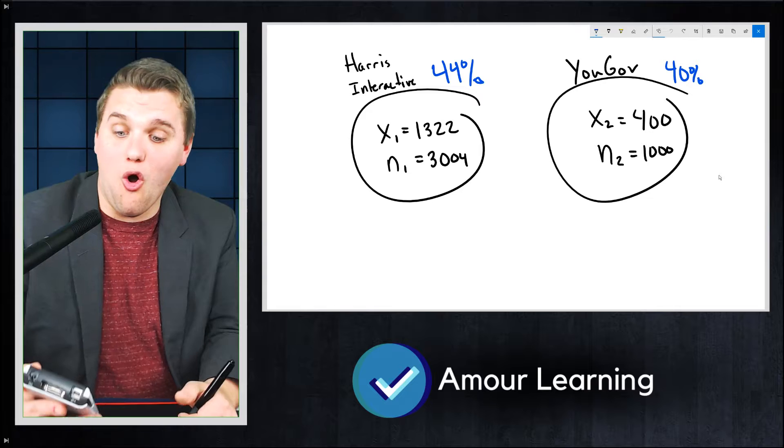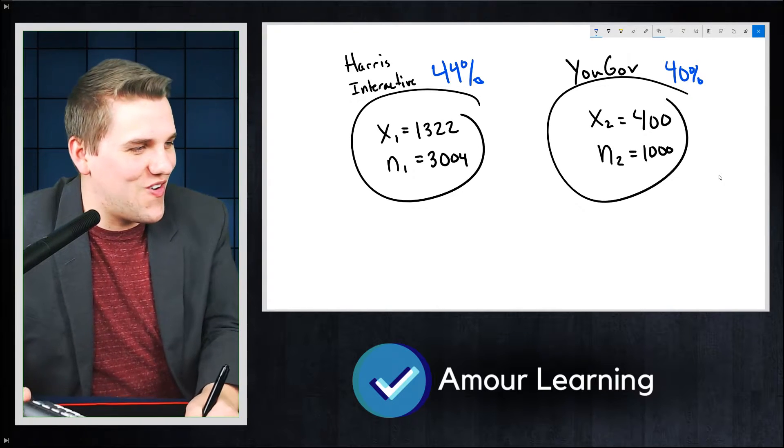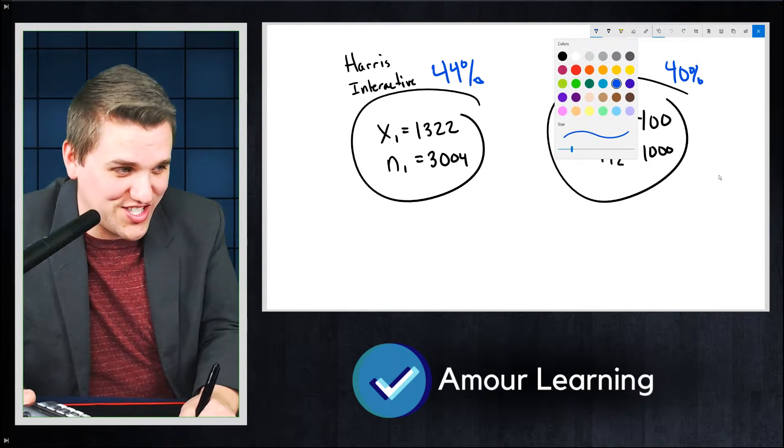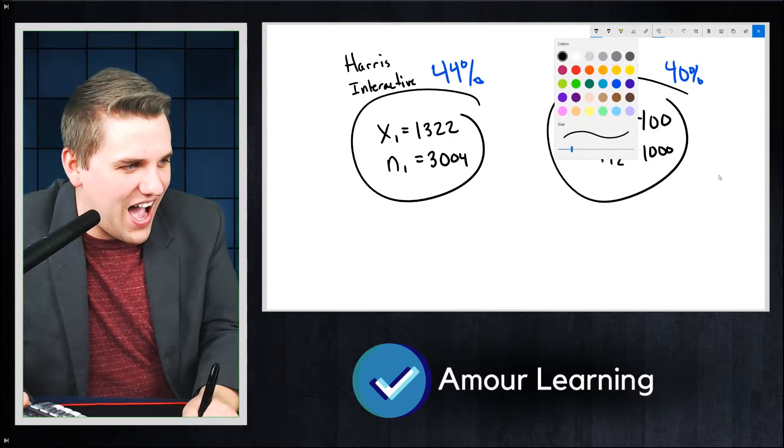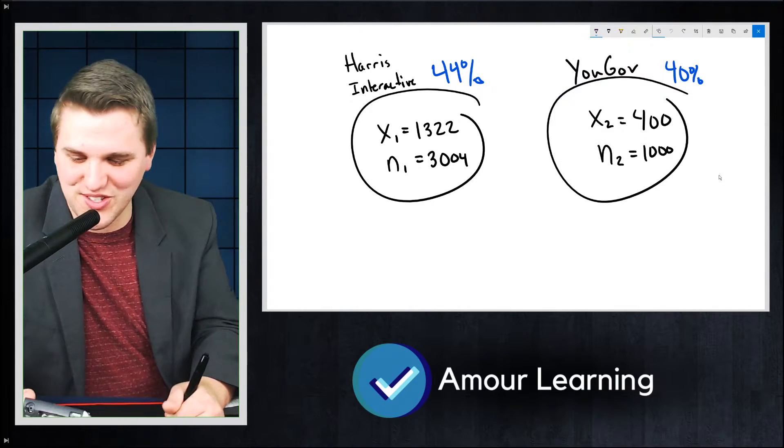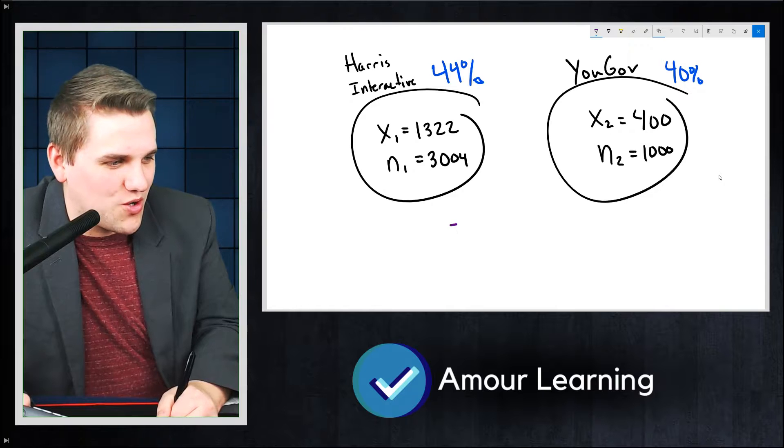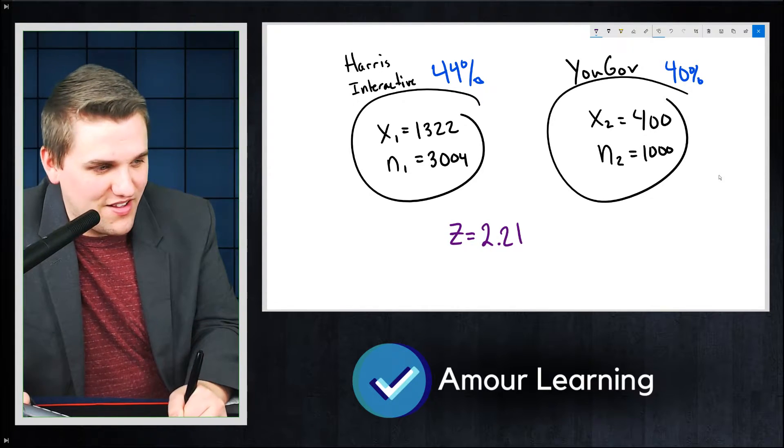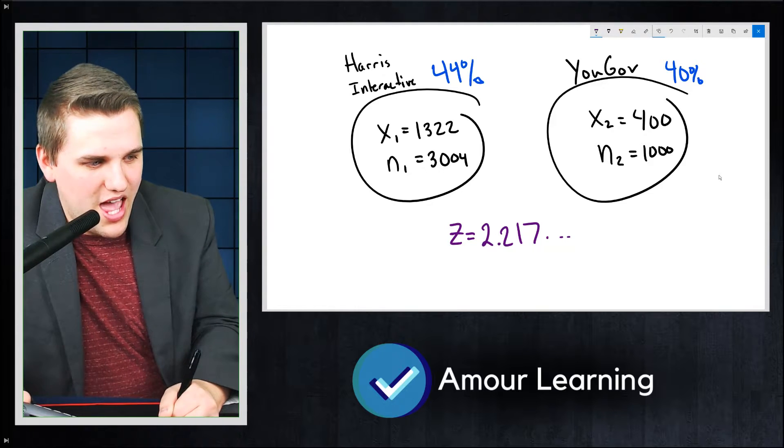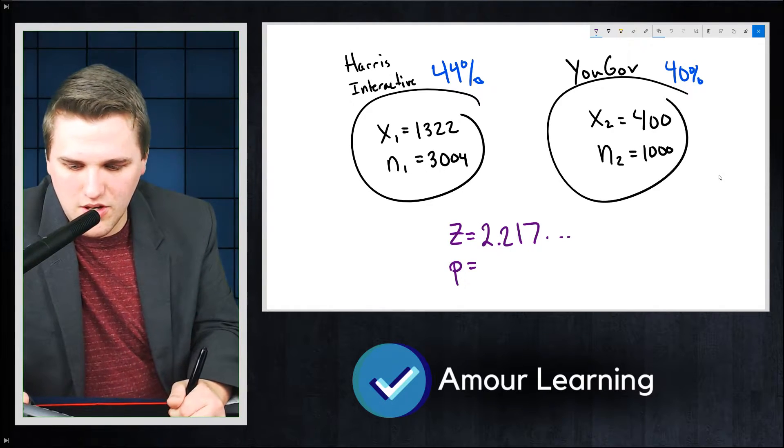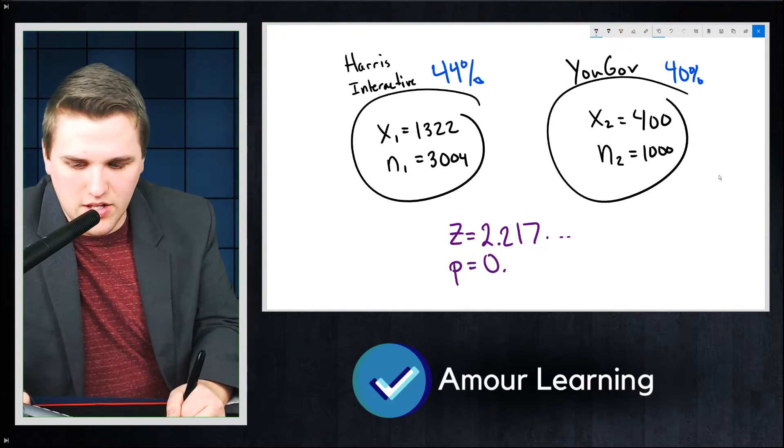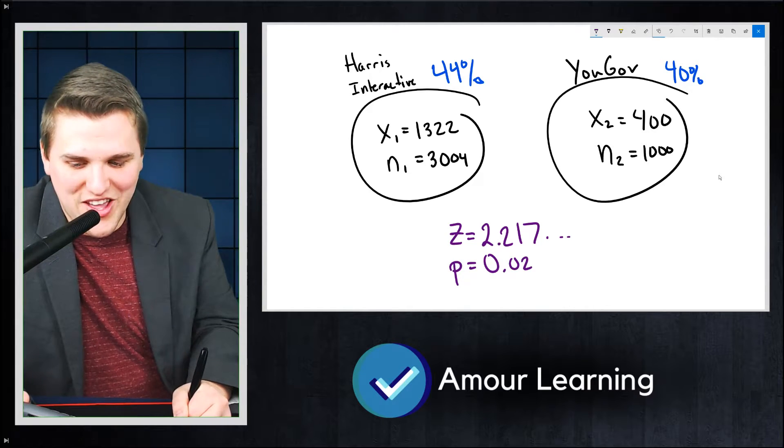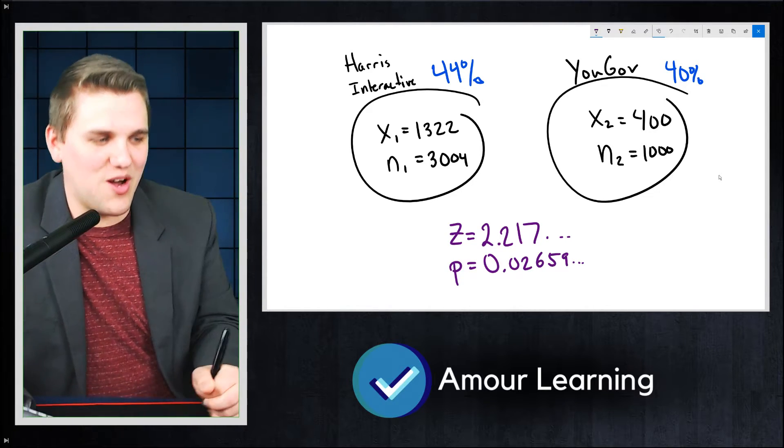And let's... Whoa! Wow! This is really interesting. I need to show you guys these results. So I got Z equals 2.217, and P equals 0.02659, and so on.